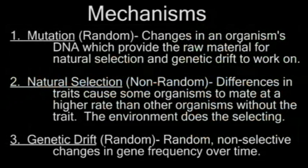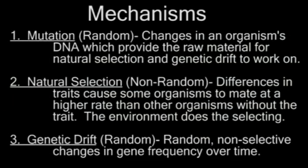The main mechanisms driving evolution are mutations, natural selection, and genetic drift. Random mutations provide the raw information necessary for the other mechanisms to work upon. Natural selection is, by definition, a non-random process, whereby the environment favors one trait leading to its accumulation in the population. It is precisely for this reason that evolution is not a blind random process, because one of its main mechanisms is, by definition, non-random.